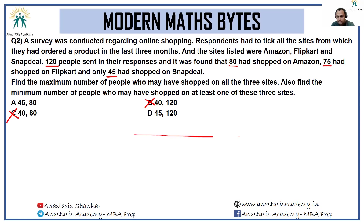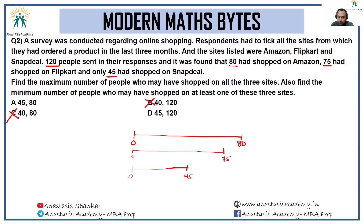Now we have to think in the inverse manner. Say the first 80 people, from 0 to 80, are those who shopped on Amazon. Within this, 75 people shopped on Flipkart, and within this, 45 people shopped on Snapdeal. So people who shopped on all three platforms is 45. The first 45 shopped on exactly three websites, the next 30 on exactly two, the last five on exactly one. The minimum number of people who shopped on at least one site is 80.